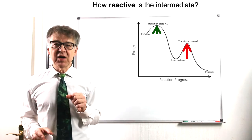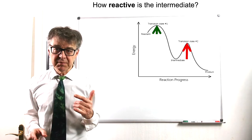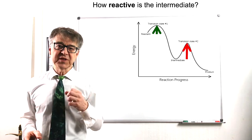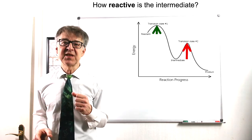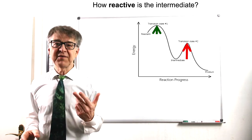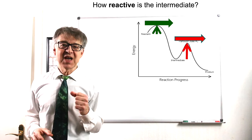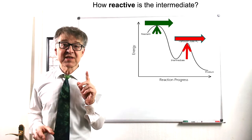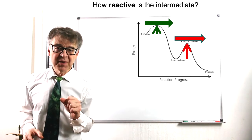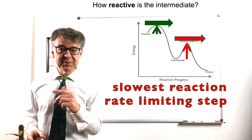The reaction profile of a consecutive reaction shows two maxima and one minimum. The maxima are the transition states and the minimum is the intermediate. Accordingly, there are also two activation energies. If the rate constants of the red and green reactions are very different, the slowest reaction will determine the overall rate. This is referred to as the rate-limiting step.